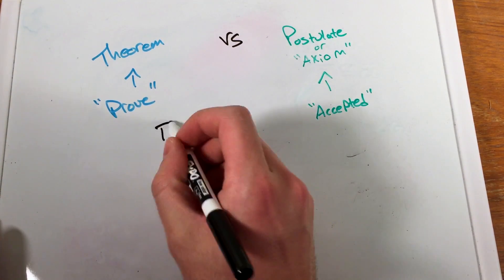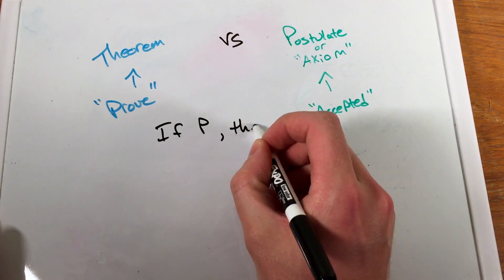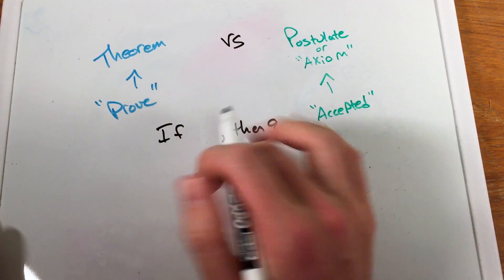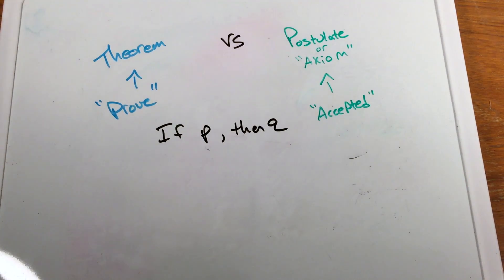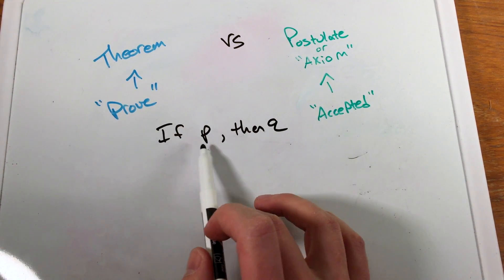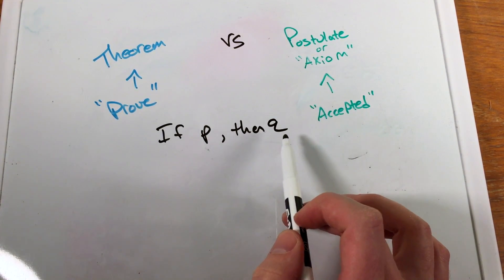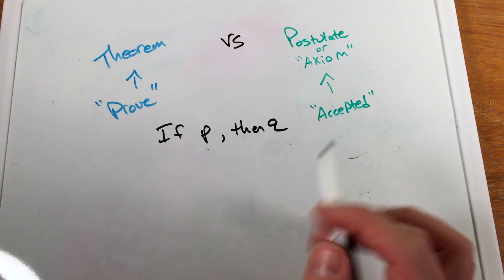So, a lot of times, you'll see it as if P then Q. Again, a lot of these are lowercase. So, if P then Q, these are just our statements here. So, if such-and-such happens, then so-and-so will happen.